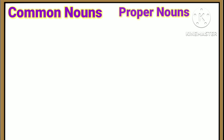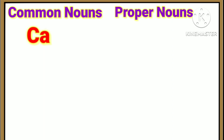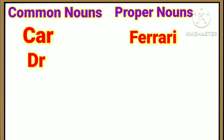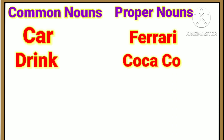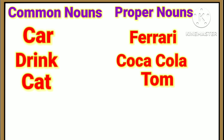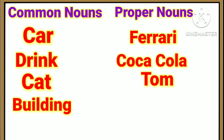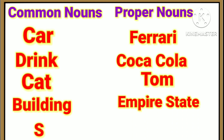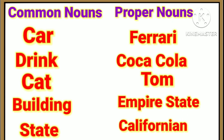Some other examples of common nouns and proper nouns: Car is a common noun, Ferrari is a proper noun. Drink is a common noun, Coca-Cola is a proper noun. Cat is a common noun, Tom is a proper noun. Building is a common noun, Empire State is a proper noun. Strait is a common noun, California is a proper noun.